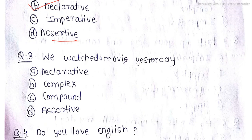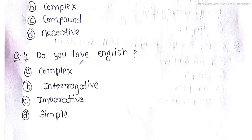Question 3: 'We watched a movie yesterday.' — again we are giving information about what happened, so this is a declarative sentence. Question 4: 'Do you love English?' — there is a question mark, so this is simply an interrogative sentence.